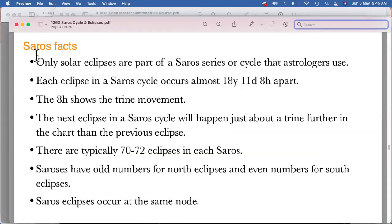So we'll just read about some of the facts, Saros facts. Only solar eclipses are part of Saros series or cycles that astrologers use. Each eclipse in a Saros cycle occurs almost 18 years, 11 days, 8 hours apart. The 8 hours shows the trine moment.